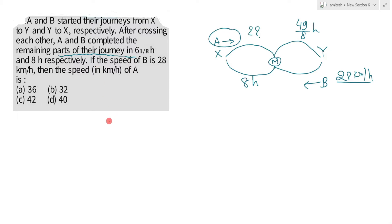I have made several videos on this type of question, the link of which I have given in the I-button. We use a simple result — how that result comes has already been shown in one video. I will tell you what that result is and how to easily solve the question based on it. What happens is, if there is a case like this where two persons travel between two points X and Y...